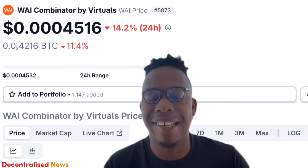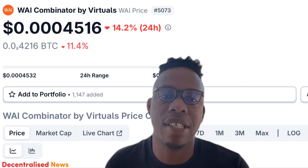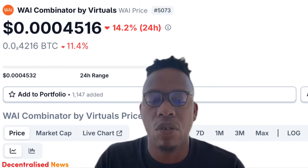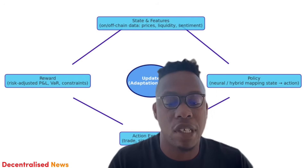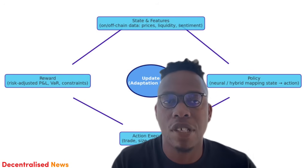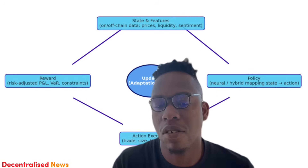Under the hood, these agents vary depending on the teams building them. Key inputs include on-chain state and features: balances, fees, price paths, volatility, liquidity depth, market impact, and on-chain context. These feed into policy functions, a reward system, and ongoing updates — a very interesting architecture overall.